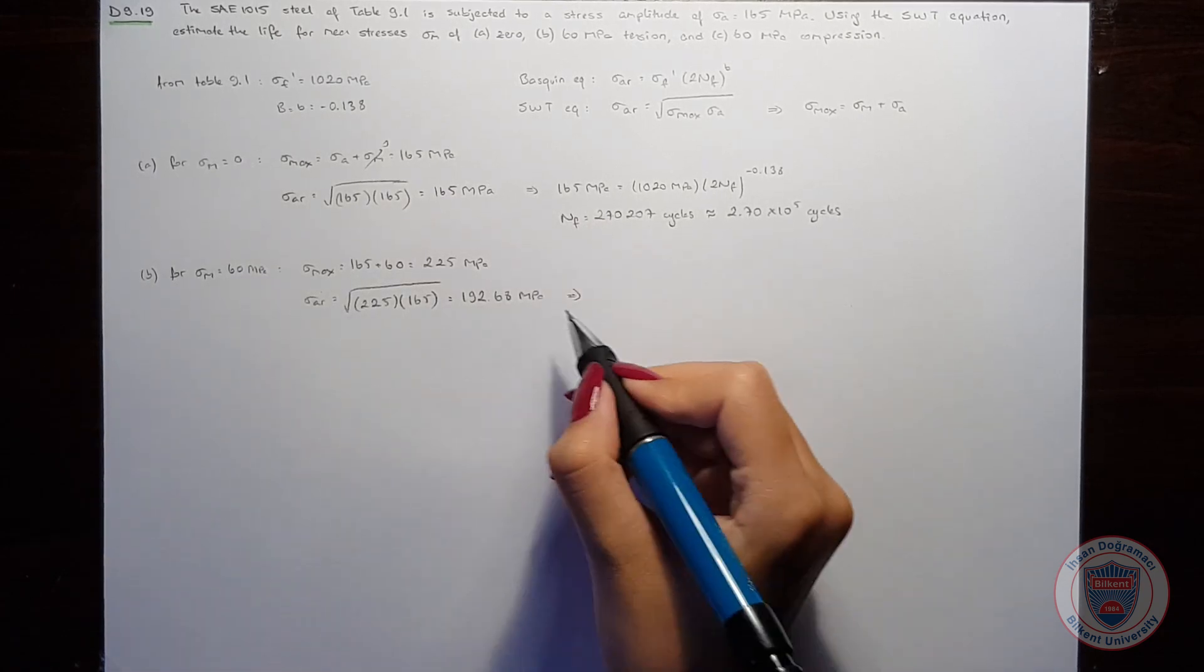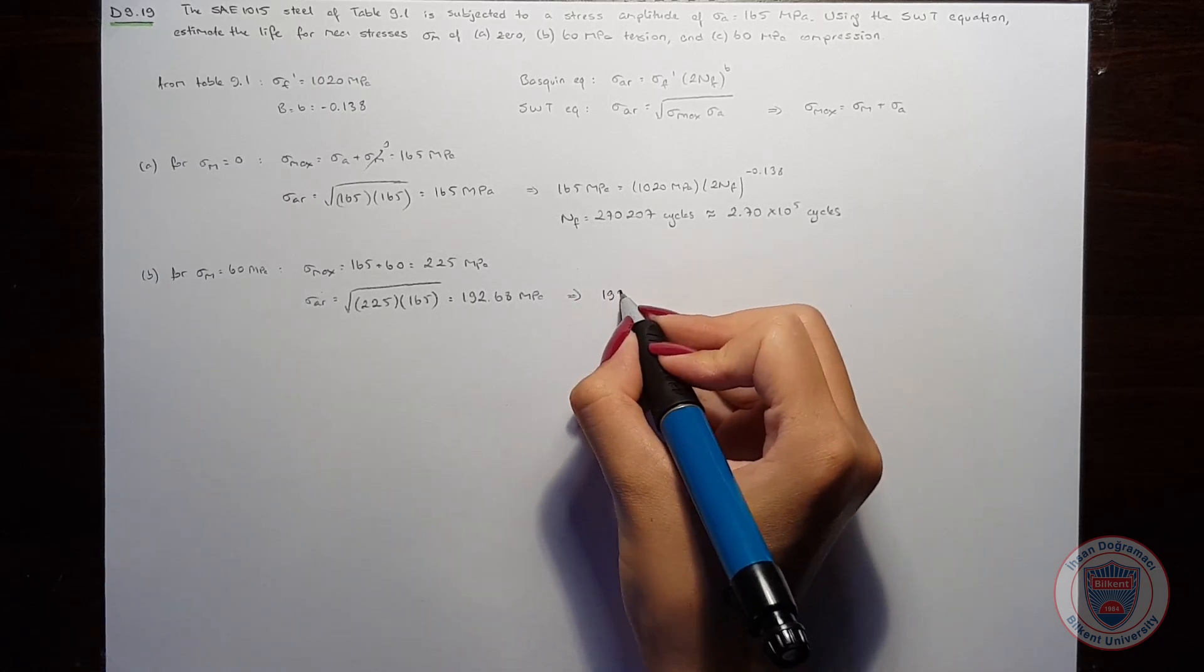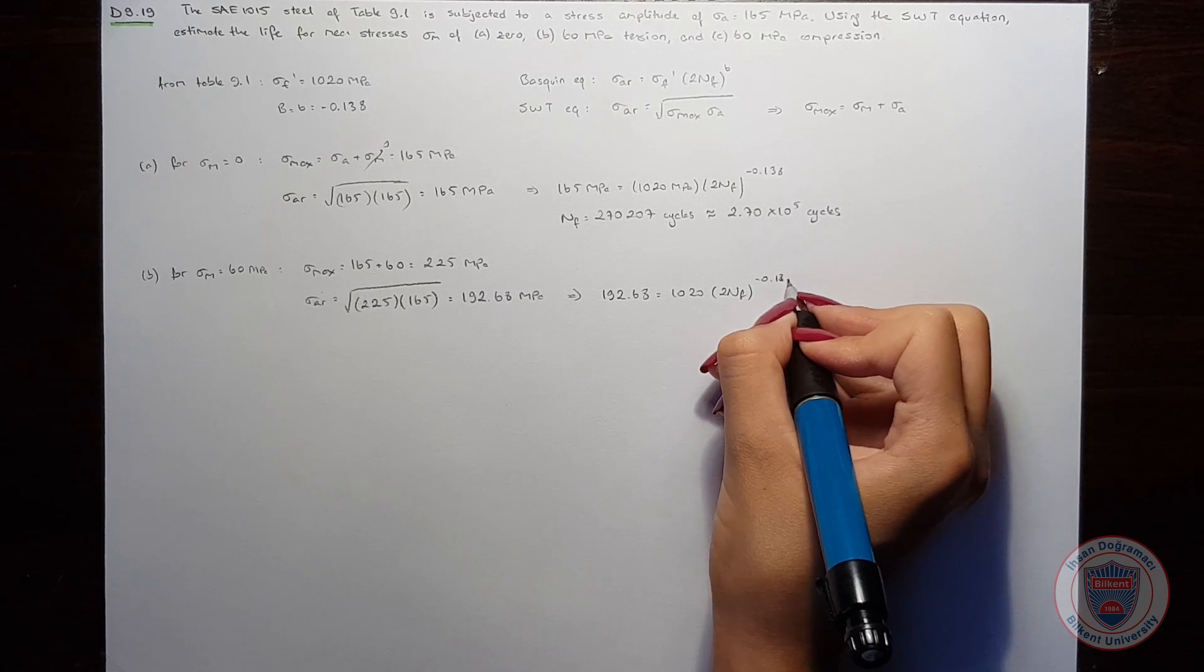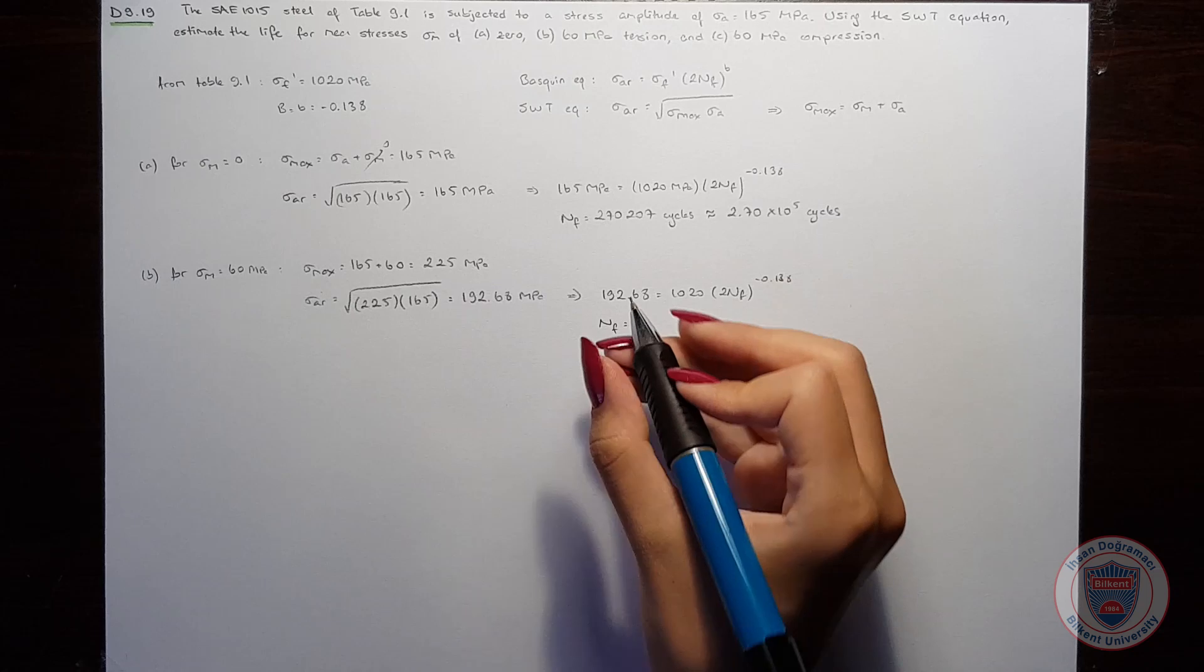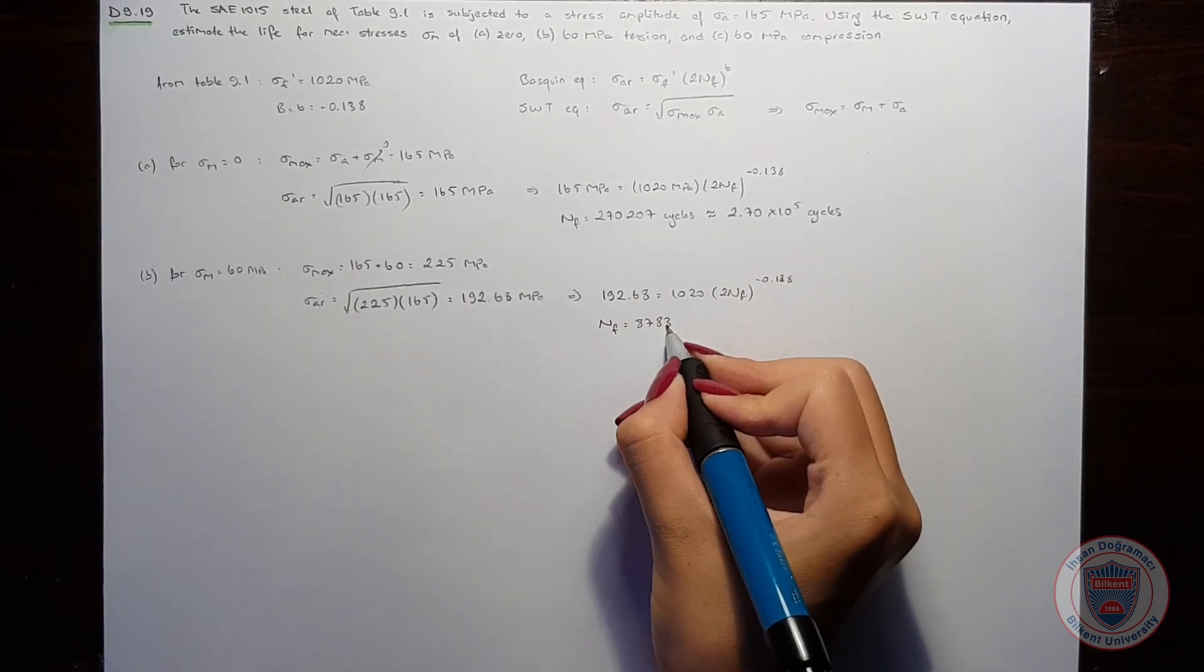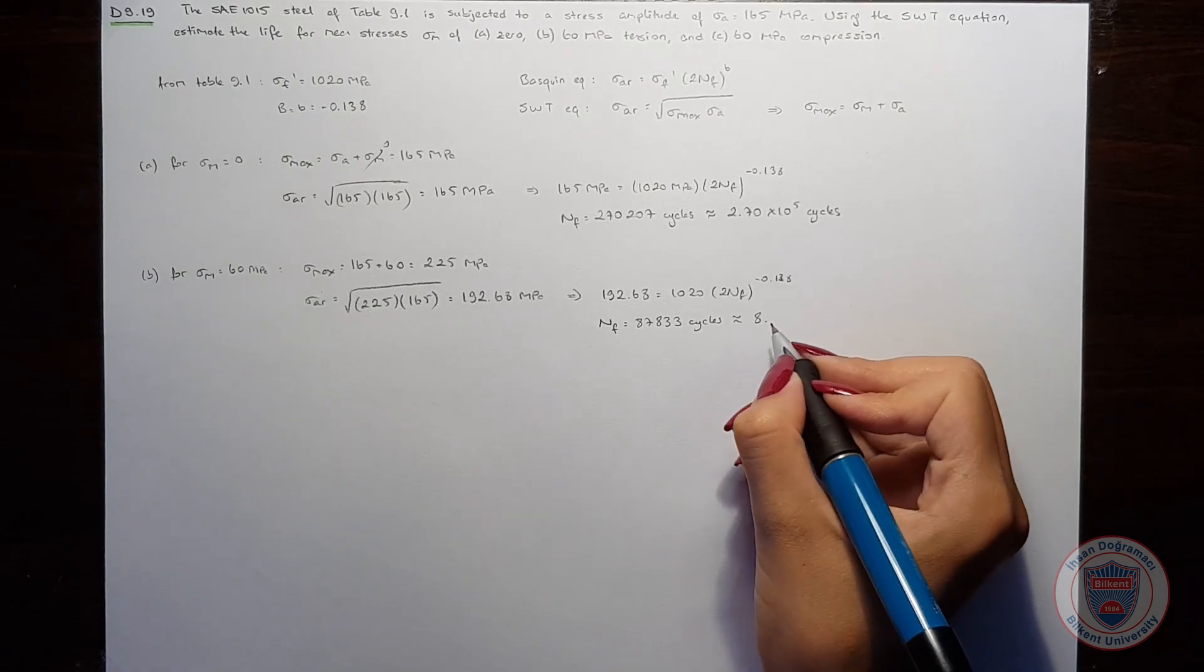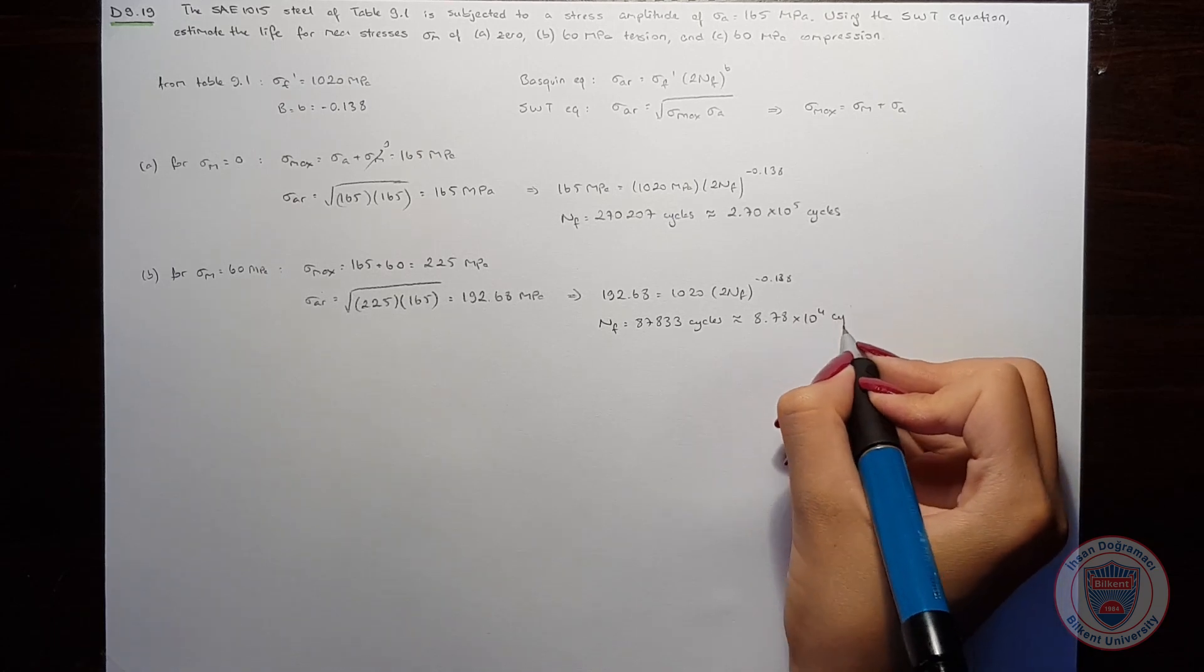Again, we are substituting this value into Basquin equation. So that the number of cycles will be 87,833, and it will be approximately 8.78 times 10 to the power of 4 cycles.